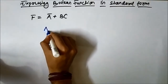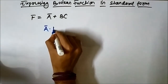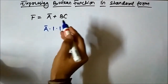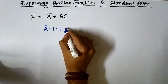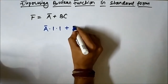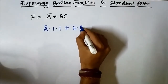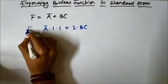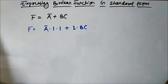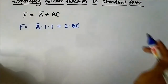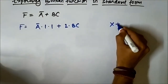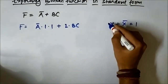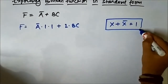To convert it into standard form, we can write A complement multiplied by 1, and similarly BC multiplied by 1 — since anything ANDed with 1 gives the same result. Now we will take the help of the Boolean identity x plus x complement equals 1.